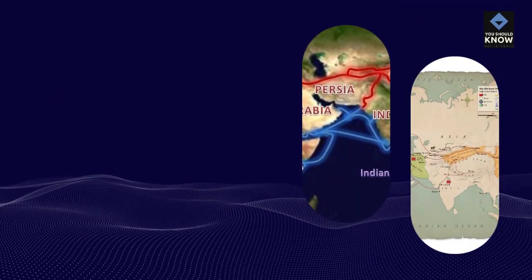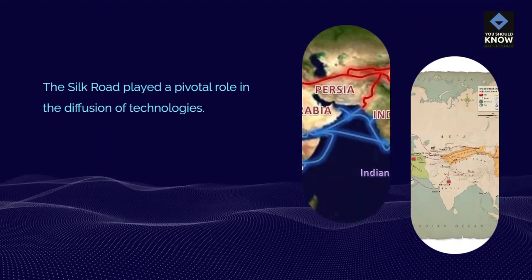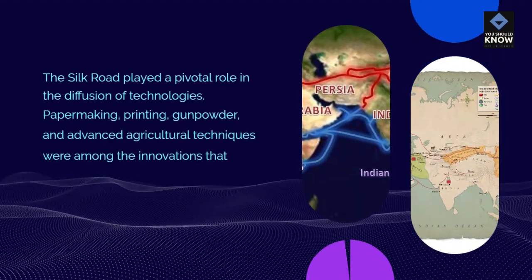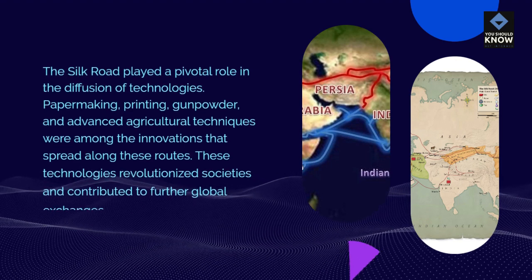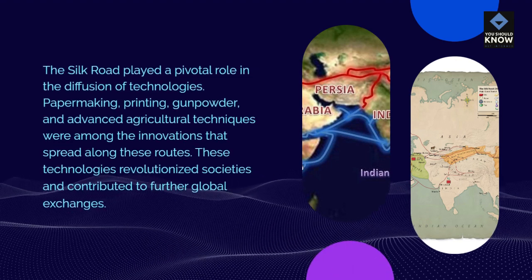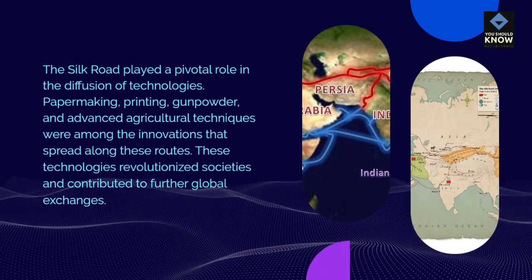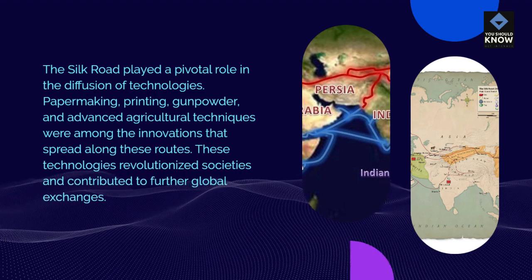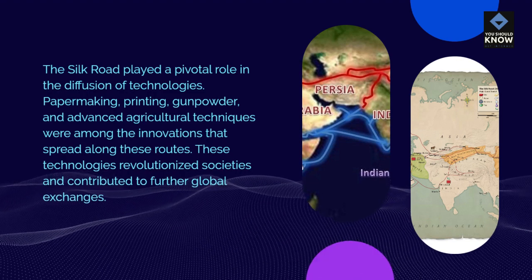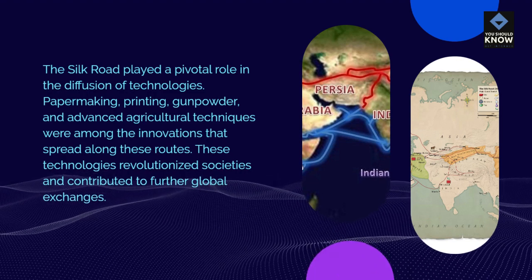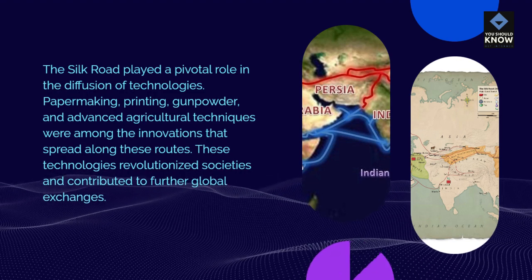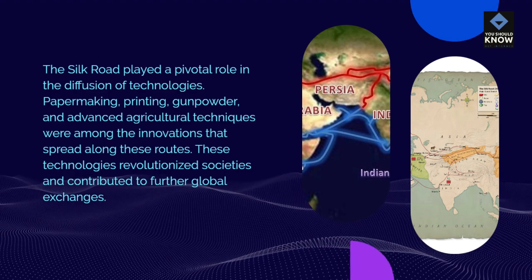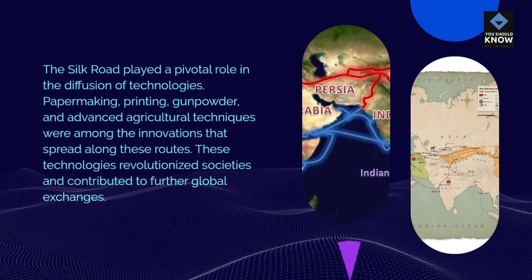Technological Diffusion: The Silk Road played a pivotal role in the diffusion of technologies. Papermaking, printing, gunpowder, and advanced agricultural techniques were among the innovations that spread along these routes. These technologies revolutionized societies and contributed to further global exchanges.